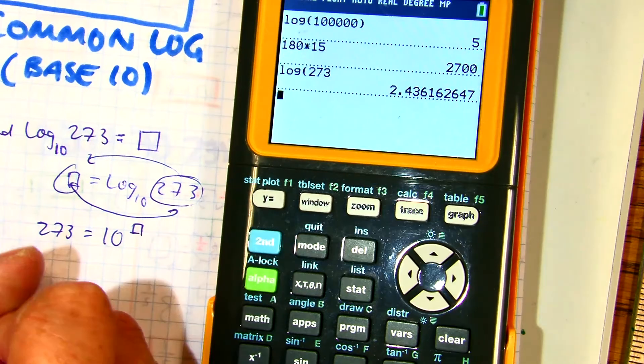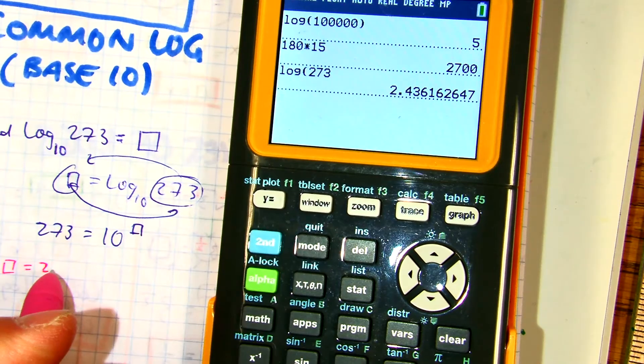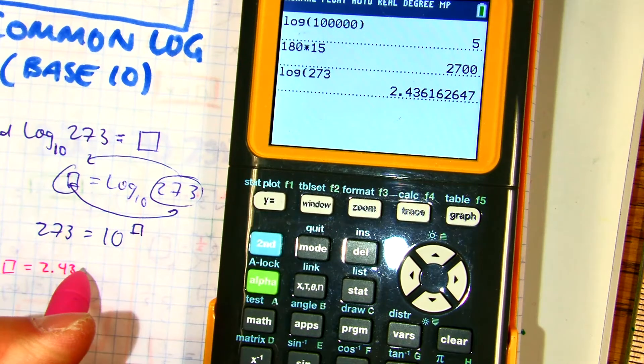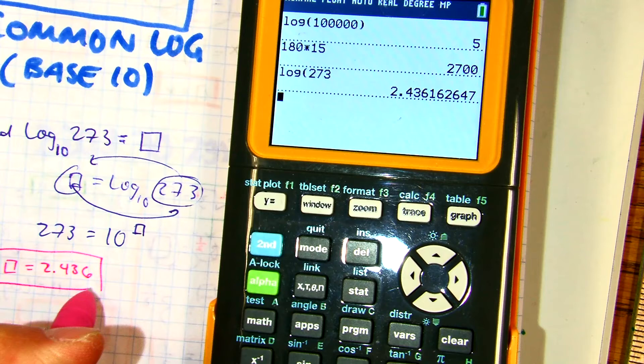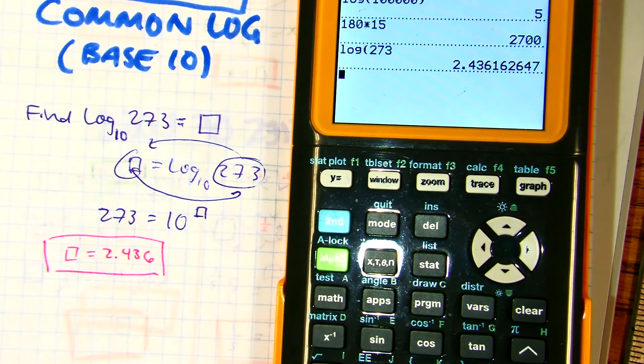And you get the box where X is equal to 2.436. Now, if I don't tell you anywhere to round, then you can choose a couple of decimal places.